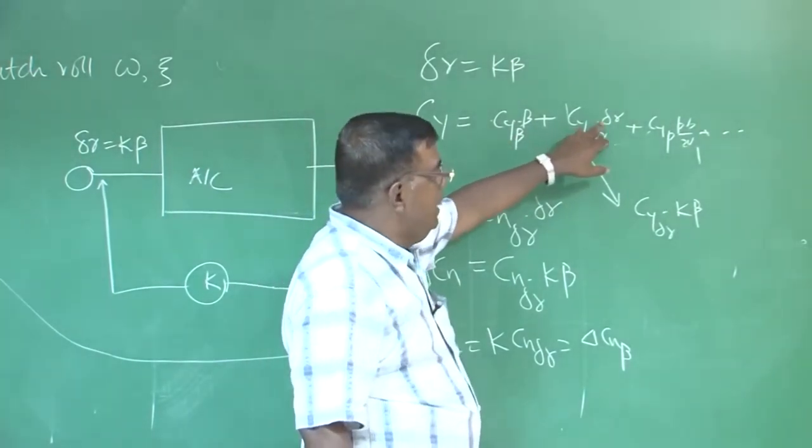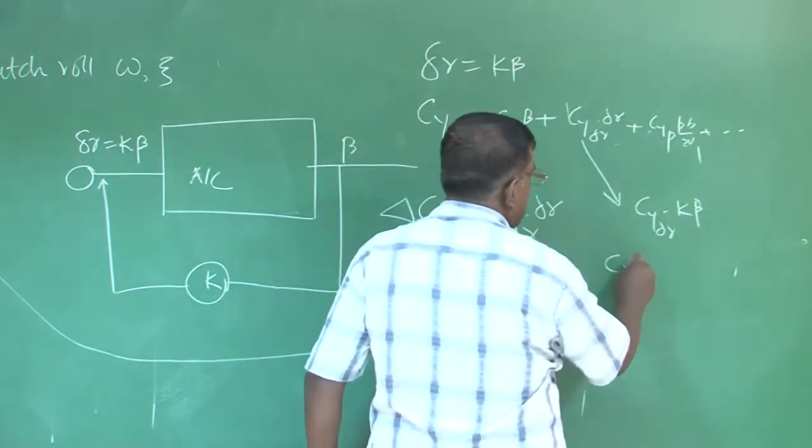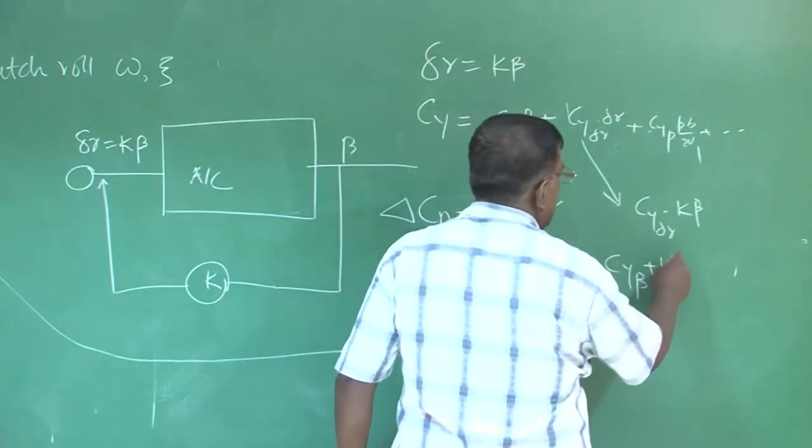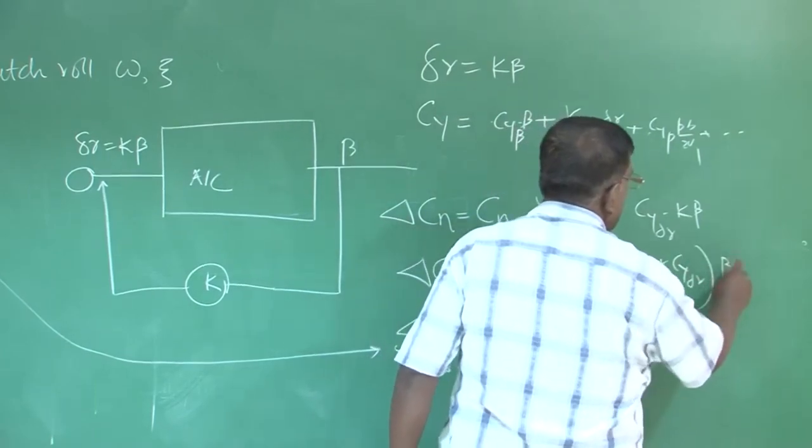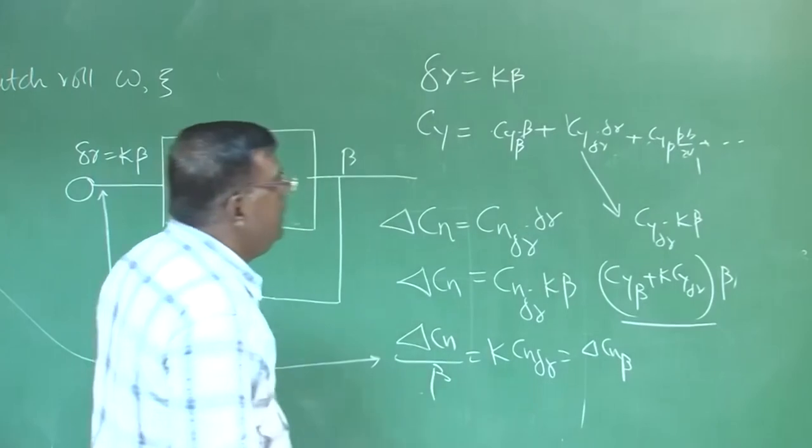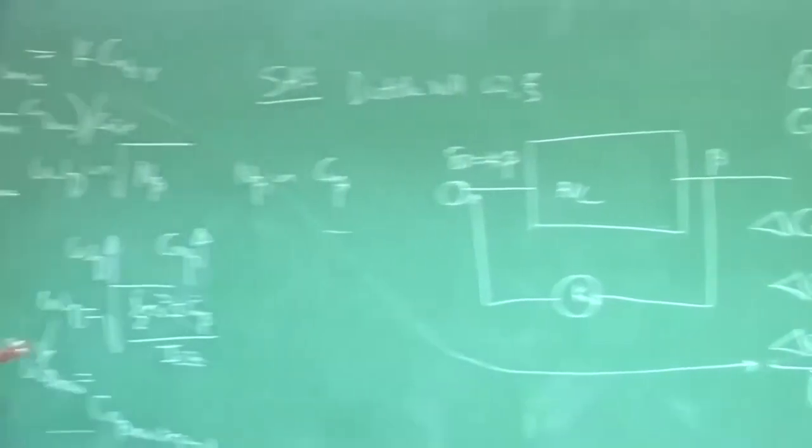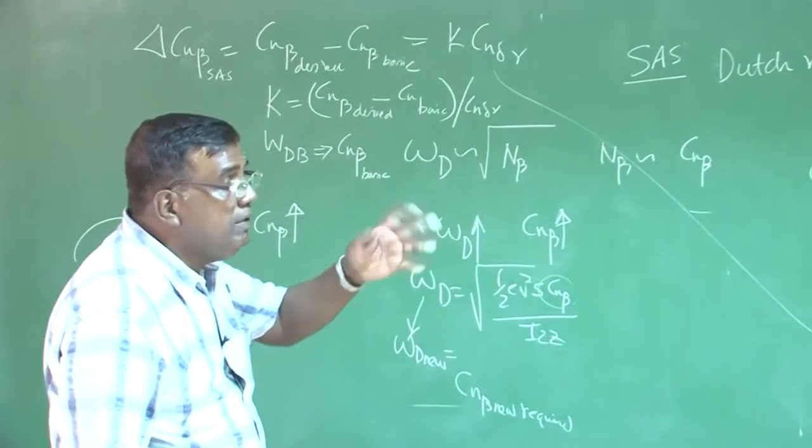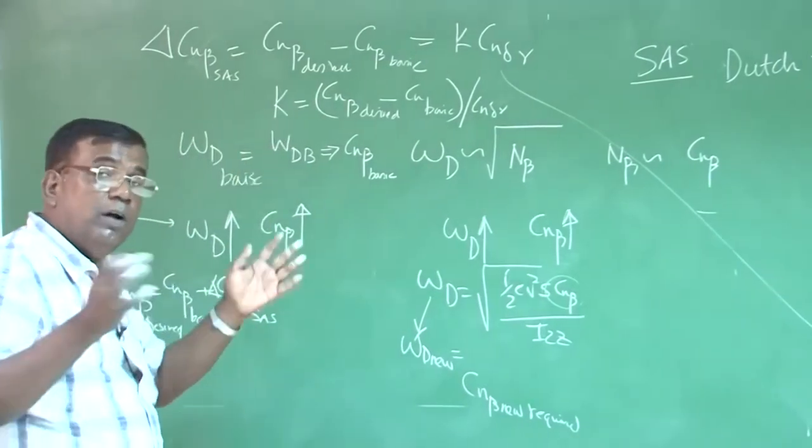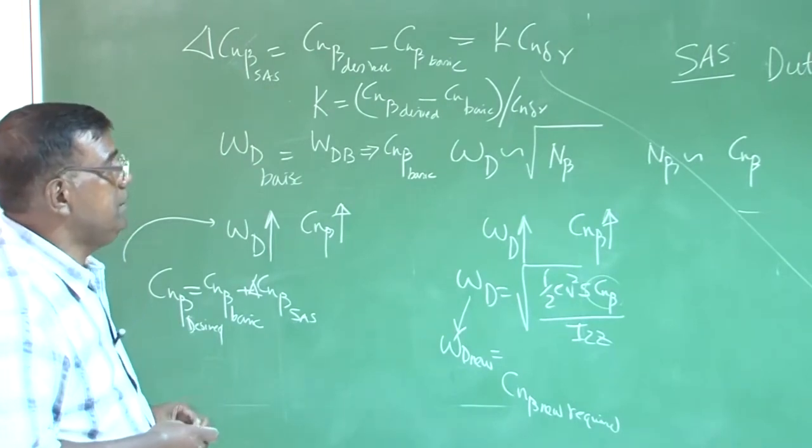c y beta into beta was there. Now, c y delta r into delta r. So, this is c y delta r into k beta. So, finally, you find c y beta plus k c y delta r into beta. So, your c y beta effectively gets modified. Because, c n beta has got modified. So, c y beta also gets modified. So, you have to see, what is the effect of this overall stability of the system. This understanding is must.